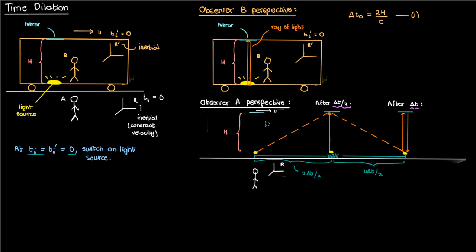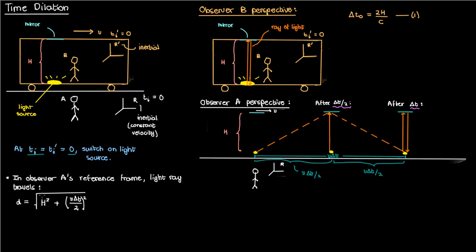The vertical distance between the source and mirror is h, which means that by the Pythagorean theorem the diagonal distance the ray of light travels is sqrt(h² + (v*delta_t/2)²). It travels this diagonal distance going up to the mirror and the same diagonal distance coming back down, so the total distance is 2 times this d.